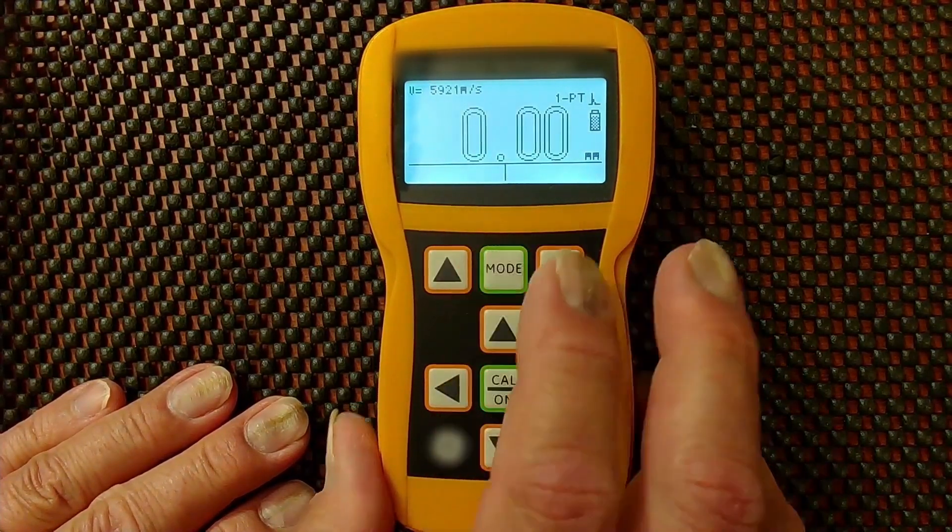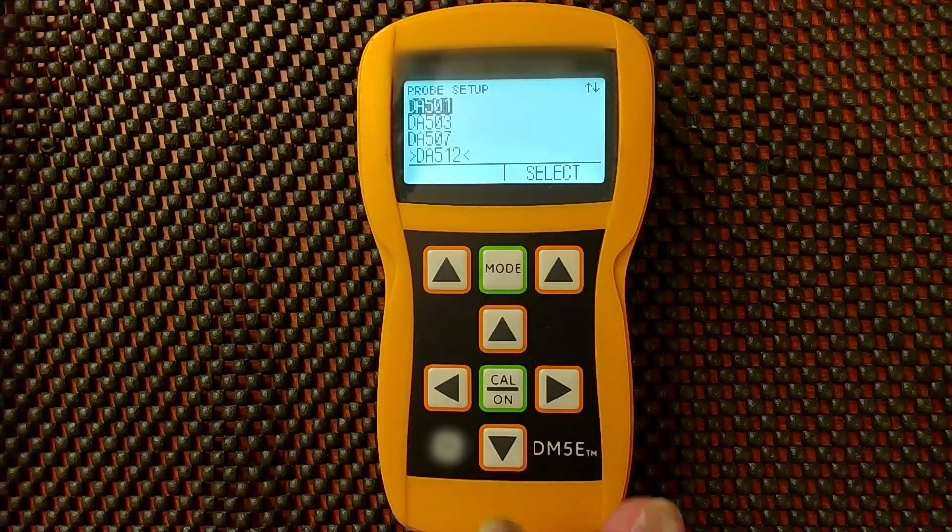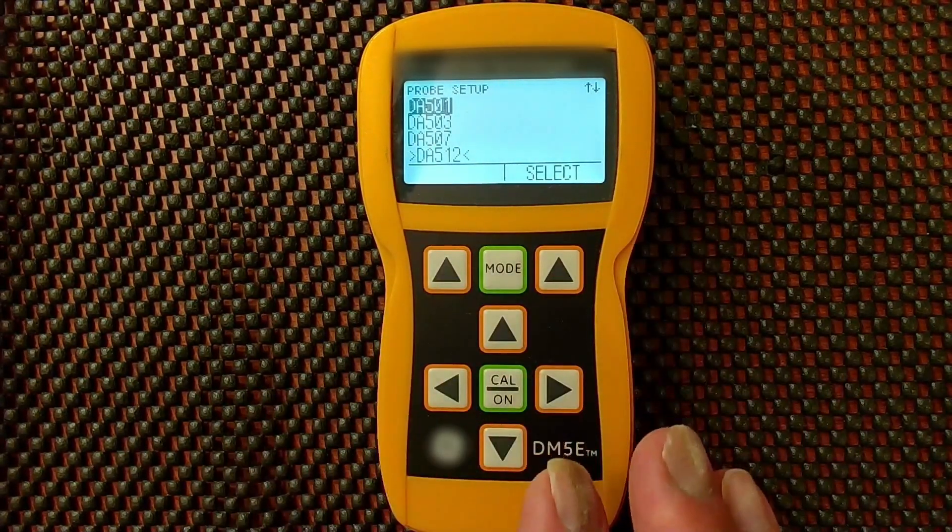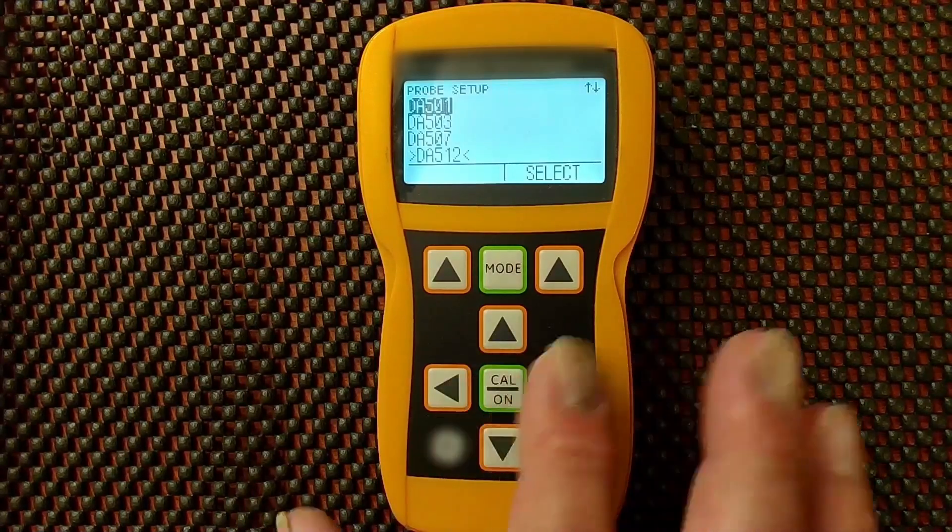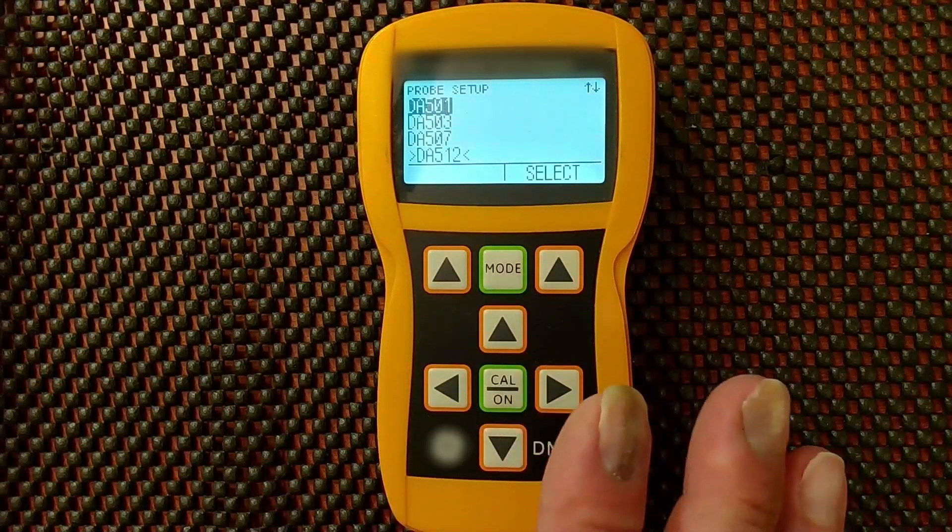To select the probe, we touch the mode button. Your keypad may be different if you have a newer DM5E than mine. Your keypad's more monochromatic, more gray than all the colors I have on mine, but the keys are all in the same place.